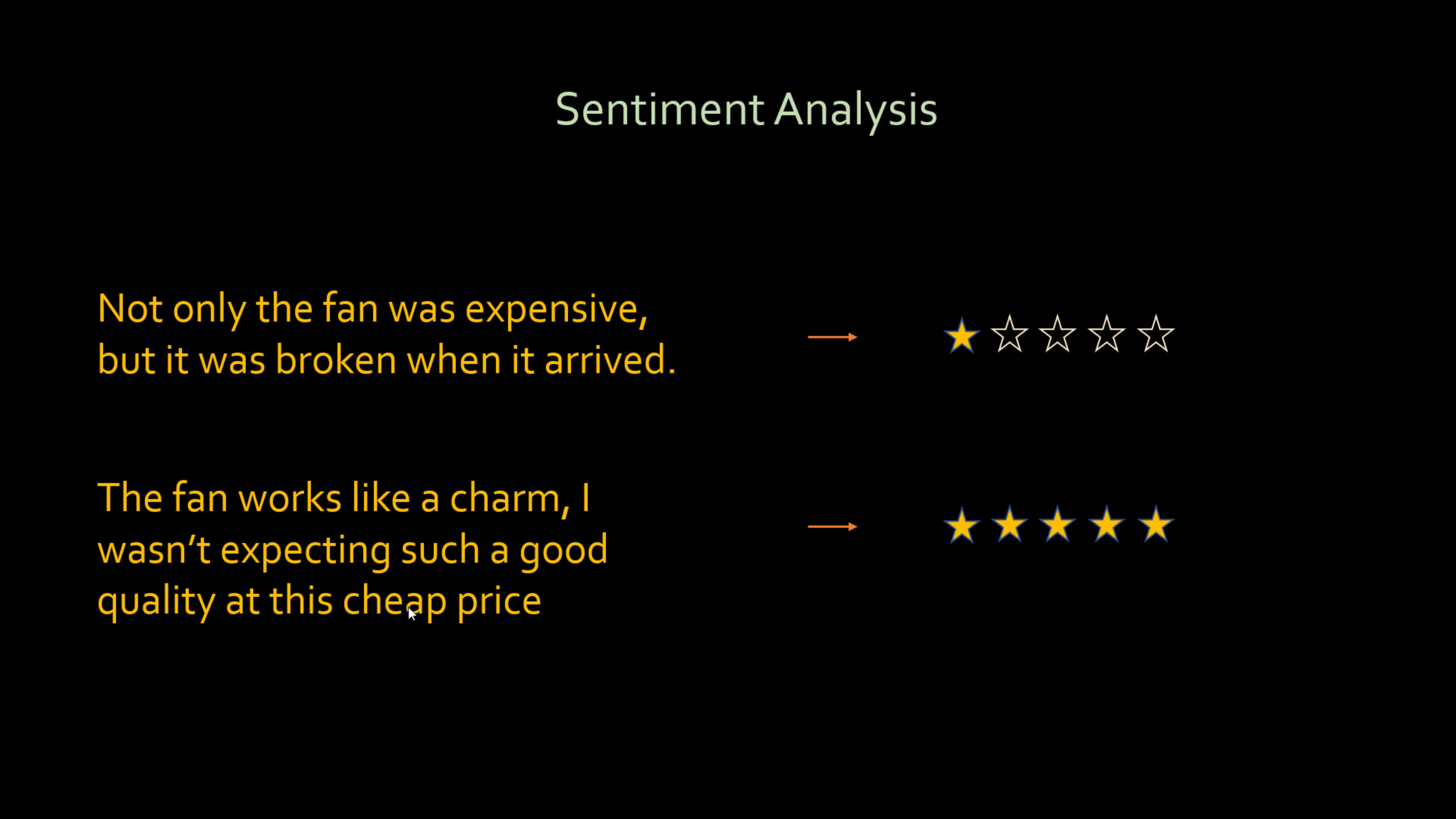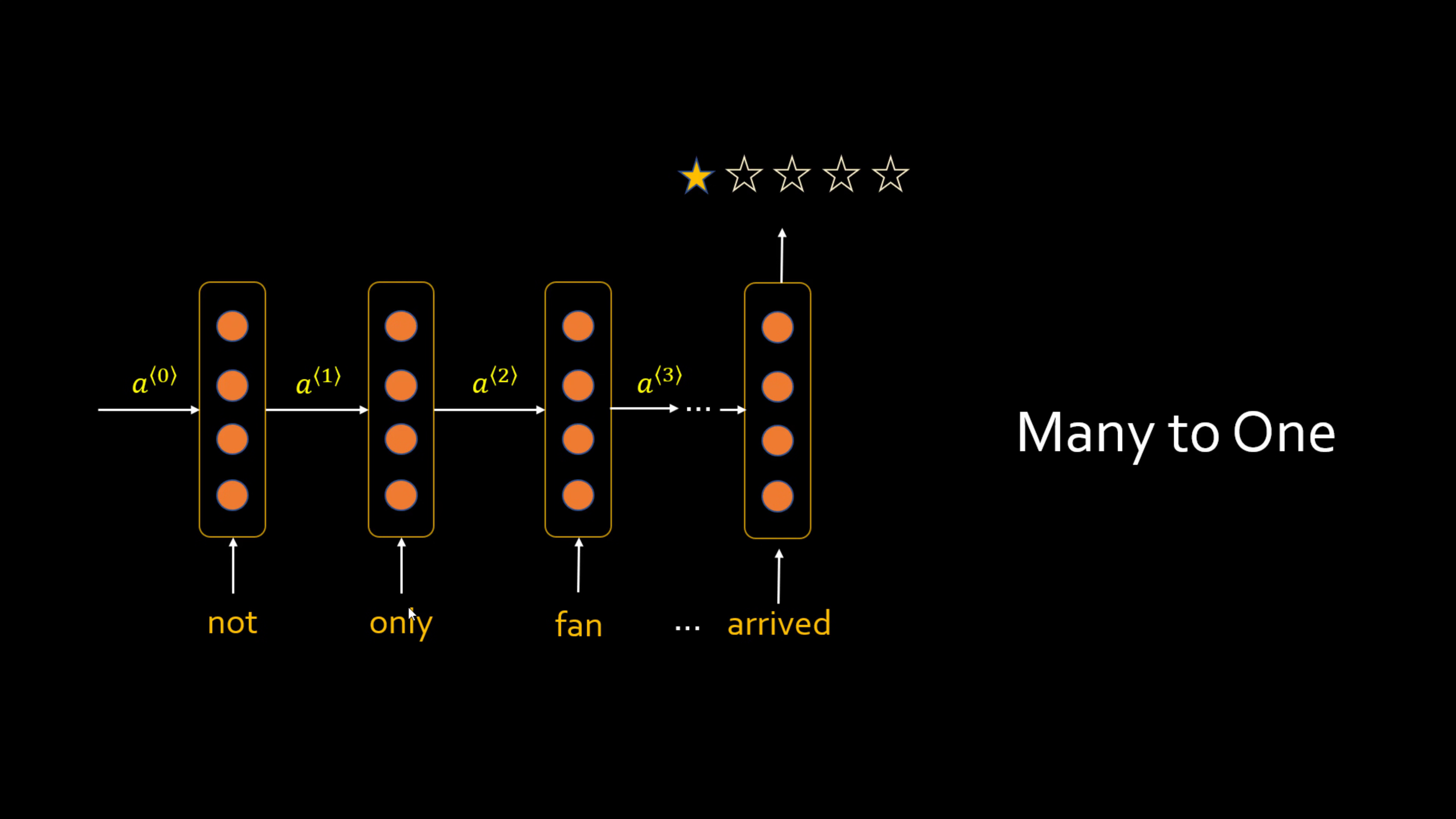So the RNN would look something like this - it will be many-to-one. So you have many words as an input but the output is one, which is your product review. And the generic way of representing this would be X1, X2, all the way to XT, and then there is Y-hat, which is the predicted output.